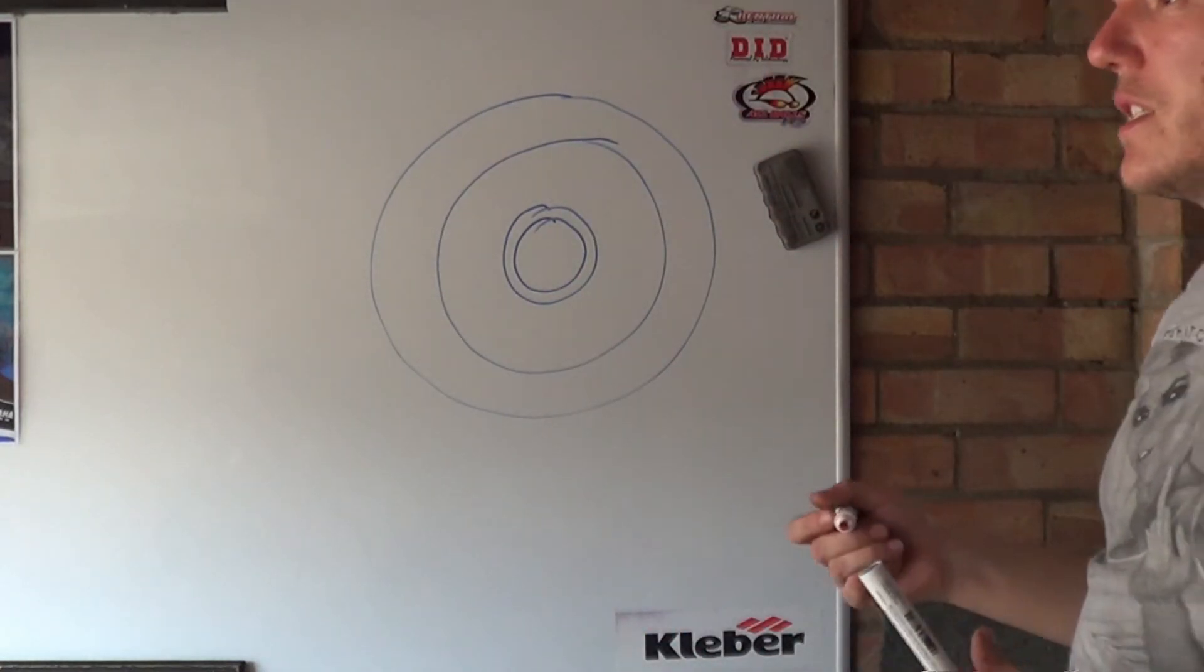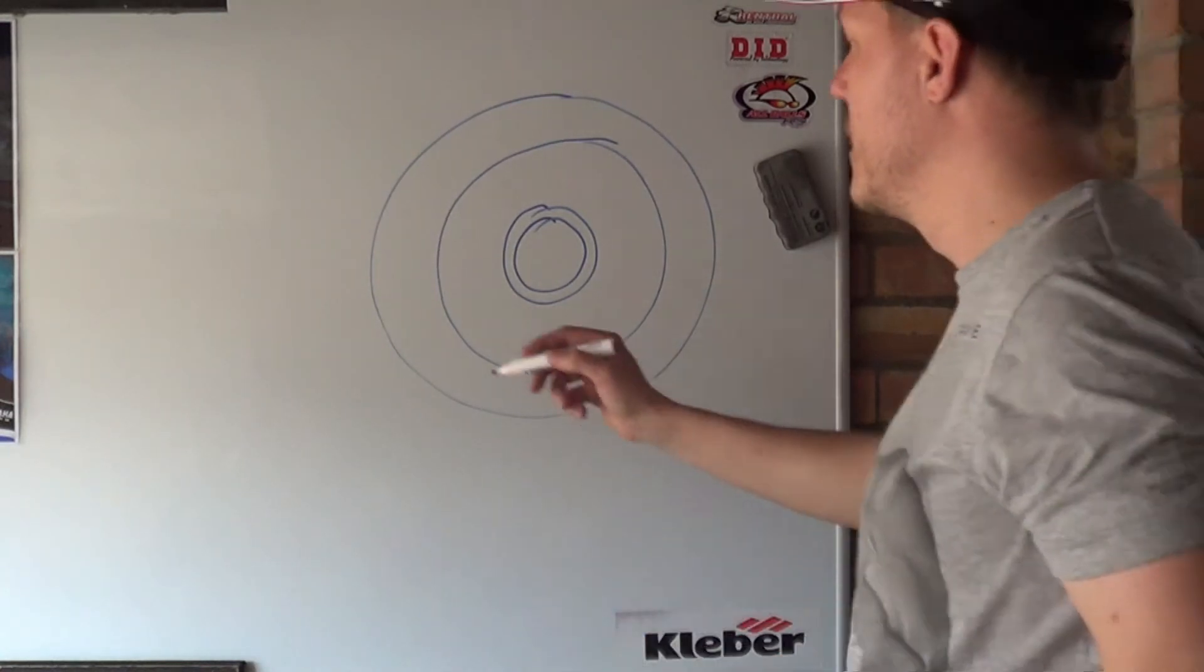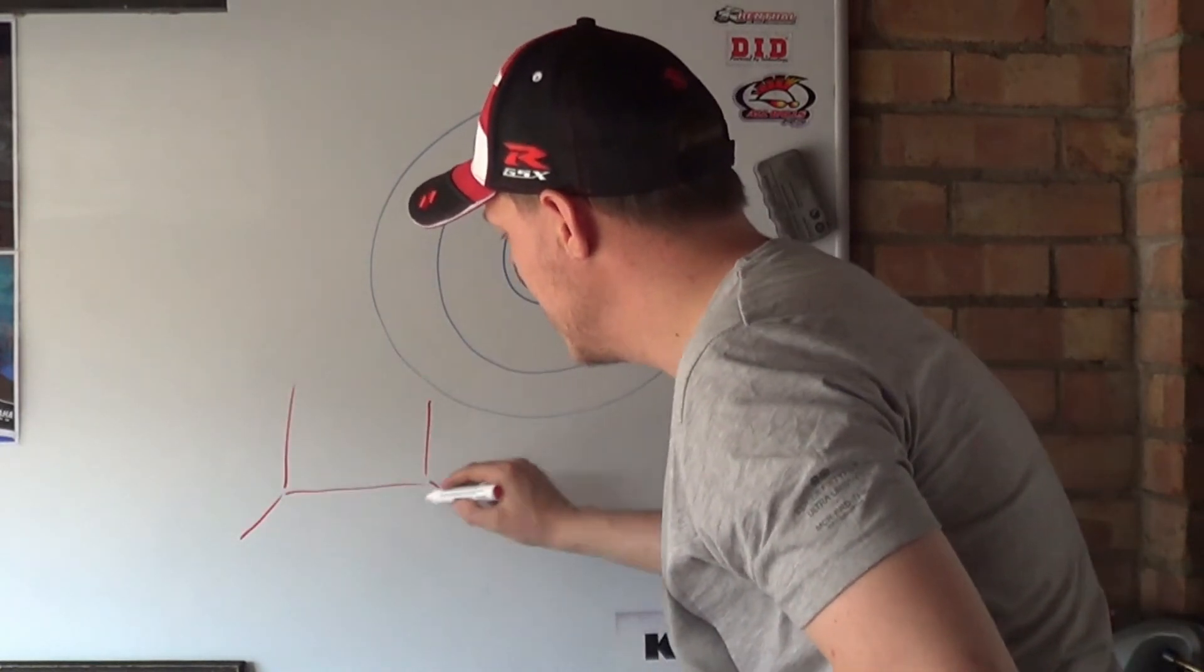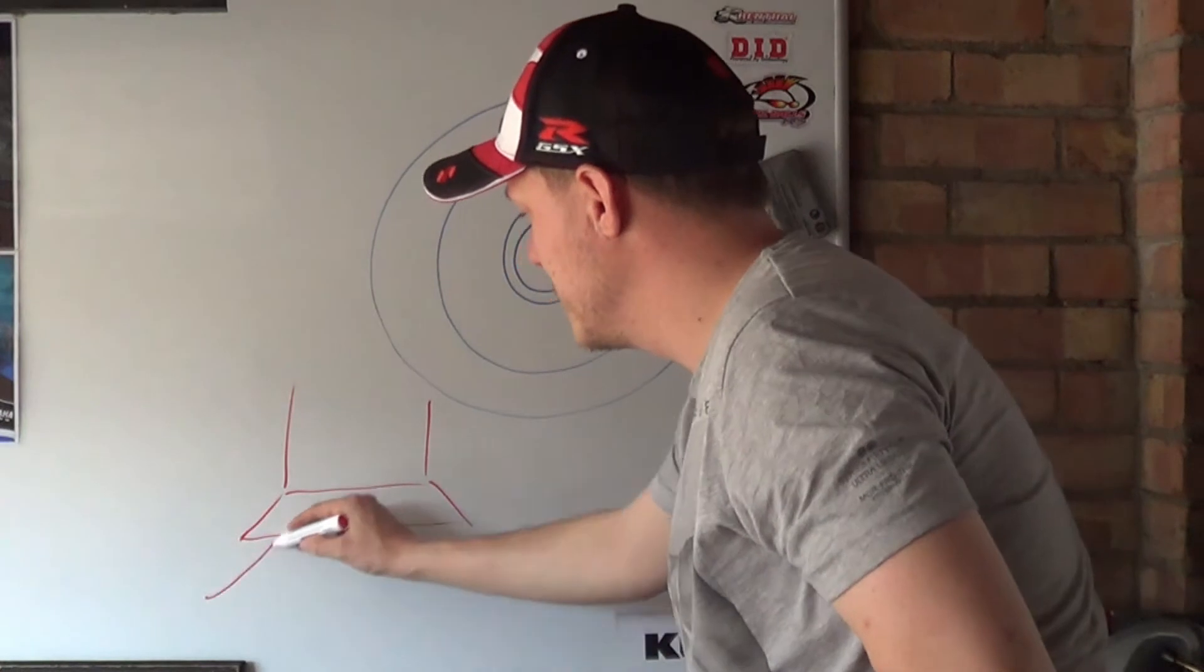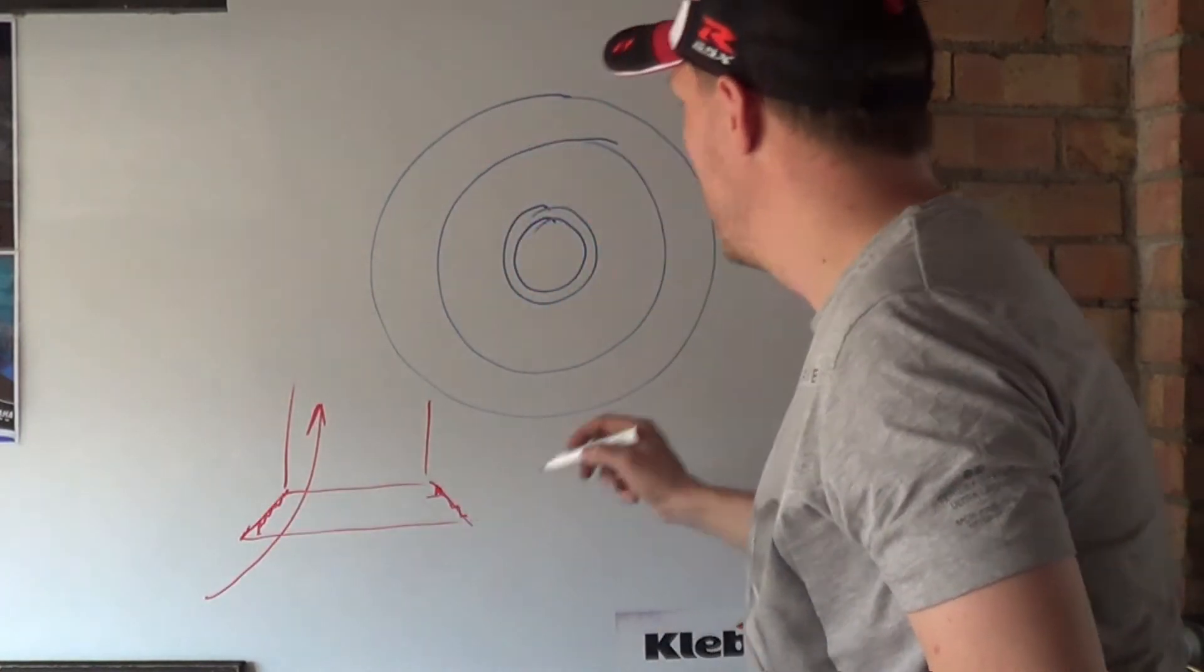Now what happens is, especially your exhaust valve, you get carbon build up. You've got a seat that looks like this, there's your port, there's your seat. And as the carbon starts swinging around here, it deposits carbon and shit on your valve seat.